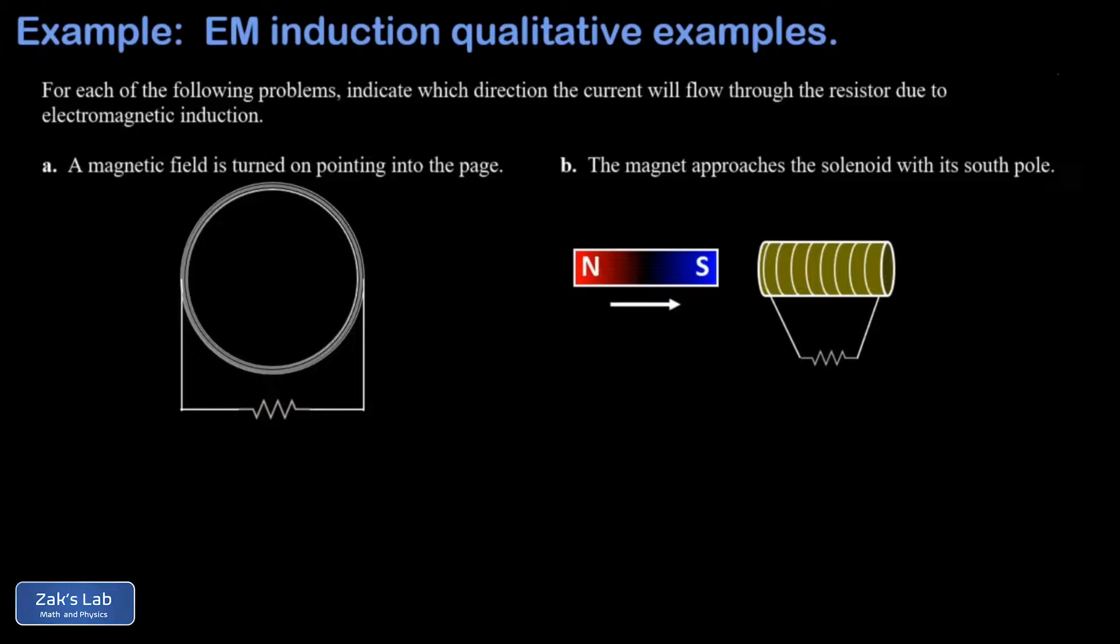In other words, the change of magnetic field through that coil. So for part A, I have this coil of wire and its terminals are hooked up to this loop of wire that has a resistor in it, and we're asked which way is the induced current going to flow in that resistor.